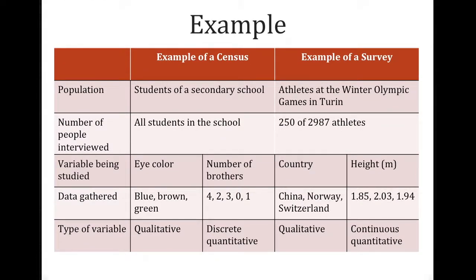So here are some examples. I am going to start with the census column first. So an example of a census population would be the students of a secondary school. Because it's a census, we're going to ask all the students in the school. A variable that we could study are the eye colors of the students and the number of brothers they have. So of the eye colors, we can ask them blue, brown, green. And of the number of brothers, we're going to limit ourselves to four, two, three, none, or one.